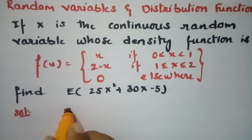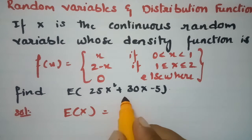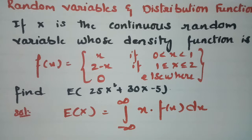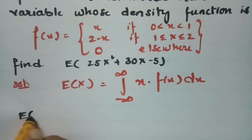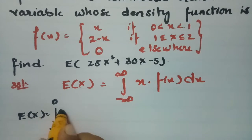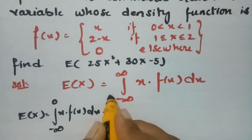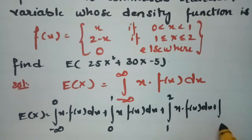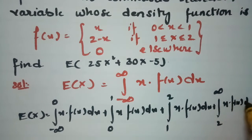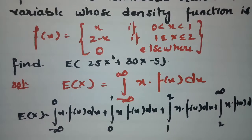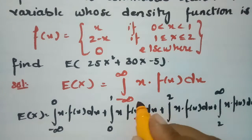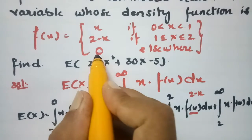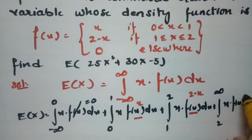First, I am going to find E(x). The formula is the integral from minus infinity to plus infinity of x times f(x) dx. The limits here are 0, 1, and 2, so I insert them. E(x) equals the integral from minus infinity to 0, plus 0 to 1, plus 1 to 2, plus 2 to infinity of x times f(x) dx. When x is in [0,1], f(x) = x; when x is in [1,2], f(x) = 2 minus x; elsewhere f(x) = 0.